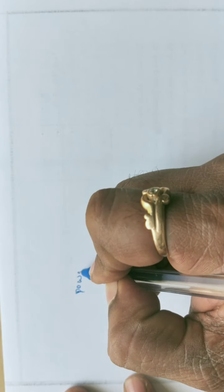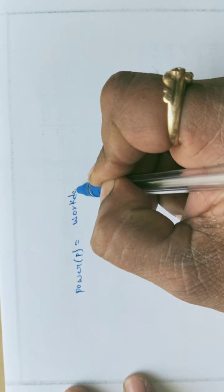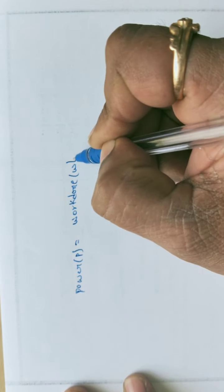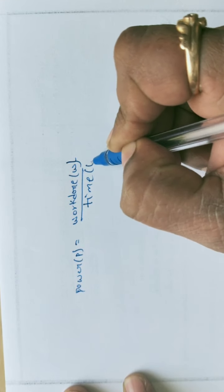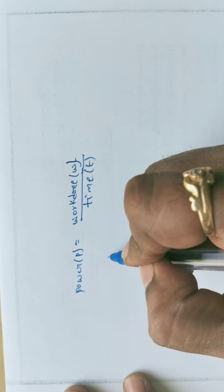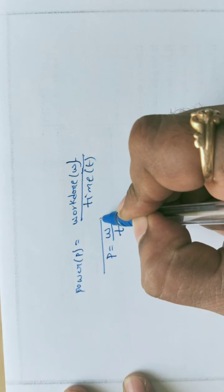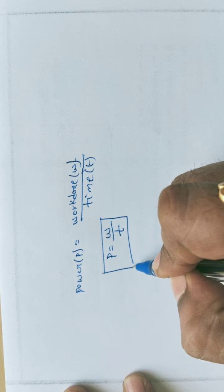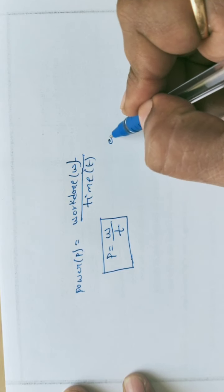Power is defined as the rate of work done. Power is represented with P. P is equal to work done W divided by time. This is the basic formula for power.